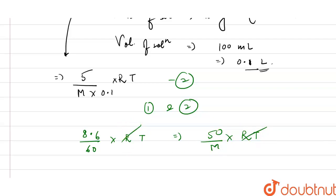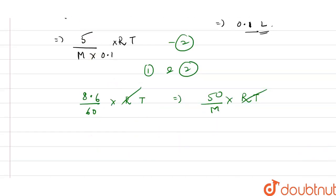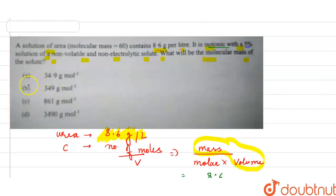And M comes out to be 60 into 50 divided by 8.6, nearly equal to 348.9, and it is nearly equal to 349. And the molar mass would be 349 gram per mole which is given to us in the part.